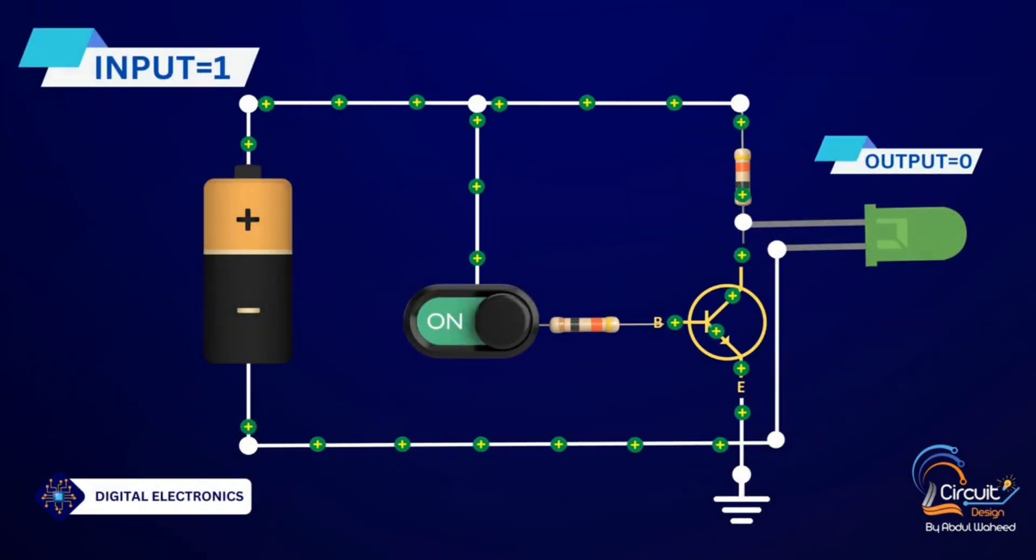Case 2: When the input to the NOT gate is 1, 5V, the transistor enters the saturation region because the base-emitter junction is forward biased with a voltage greater than 0.7V. This allows current to flow through the collector-emitter path, causing the output voltage at the collector to drop to a low value close to zero volt.